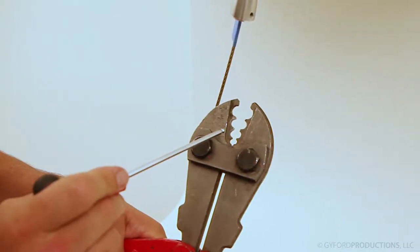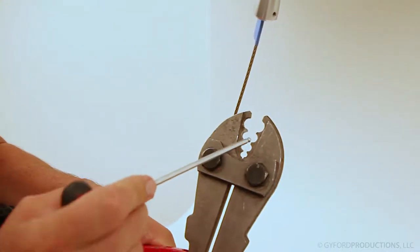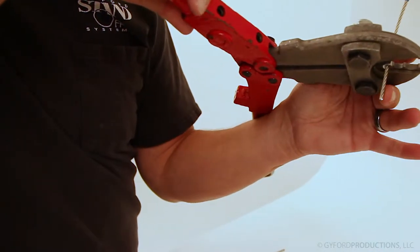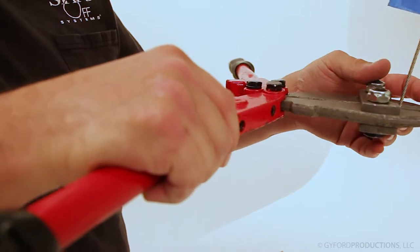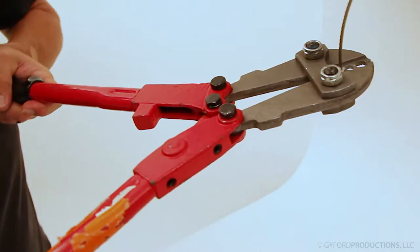Crimp the wire stopper with the hole marked for 3/32. Start with the wire stopper held firmly in the crimper and leave about 1/8 of an inch of wire below the stopper.